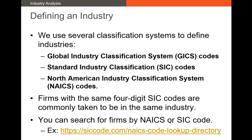These GIX codes are Global Industry Classification System codes. They break up any economy into a bunch of different sectors and then subsectors, also known as industries.